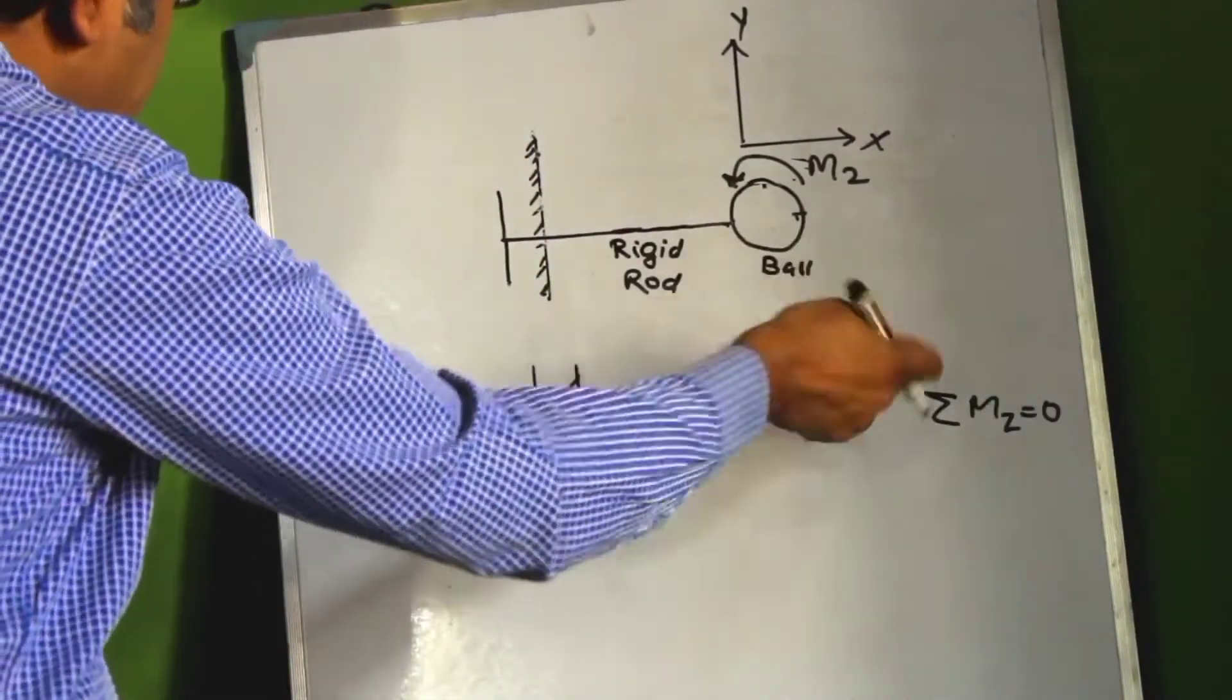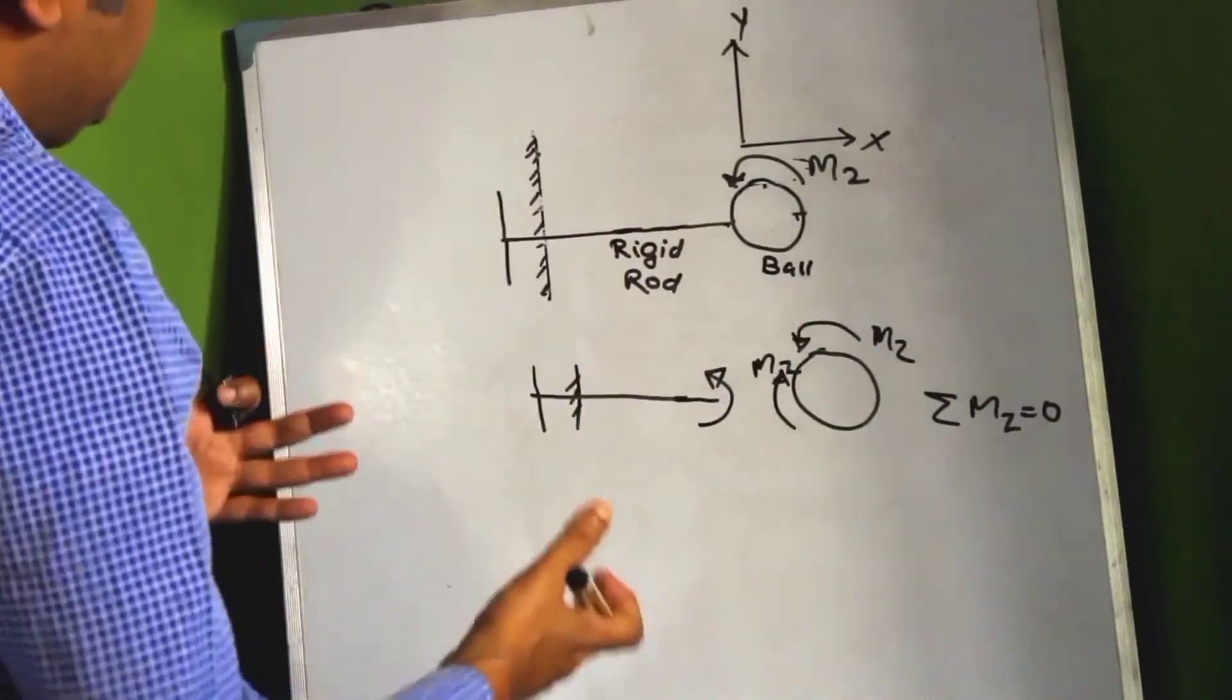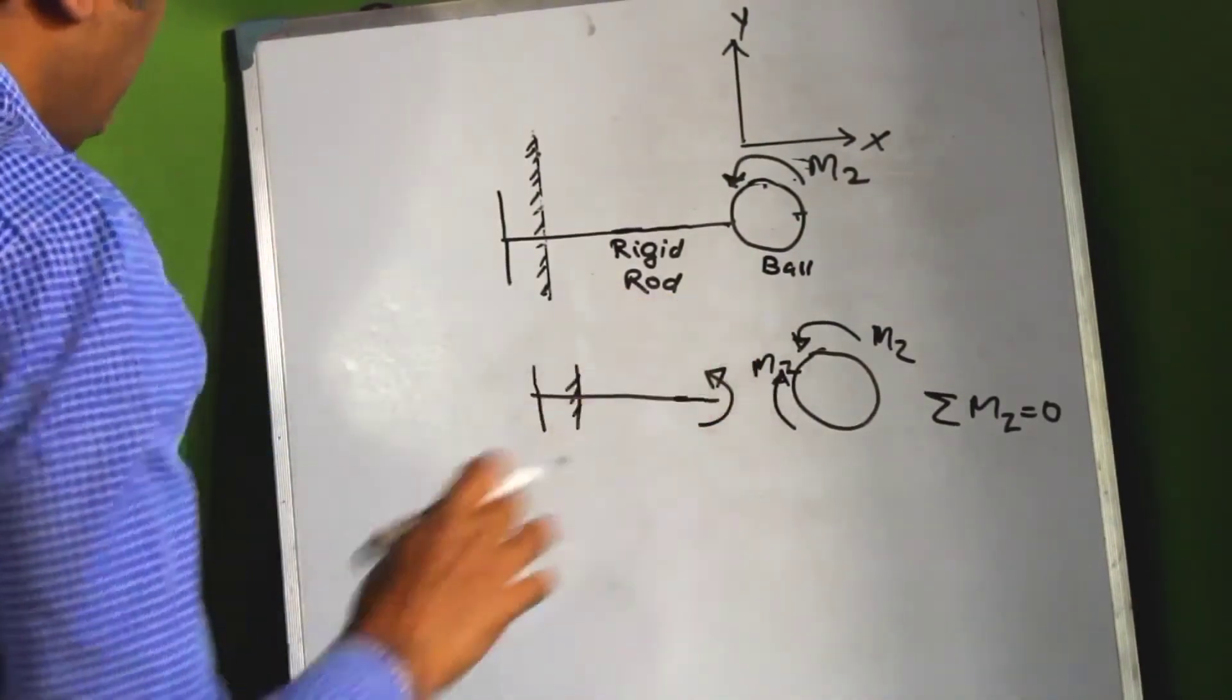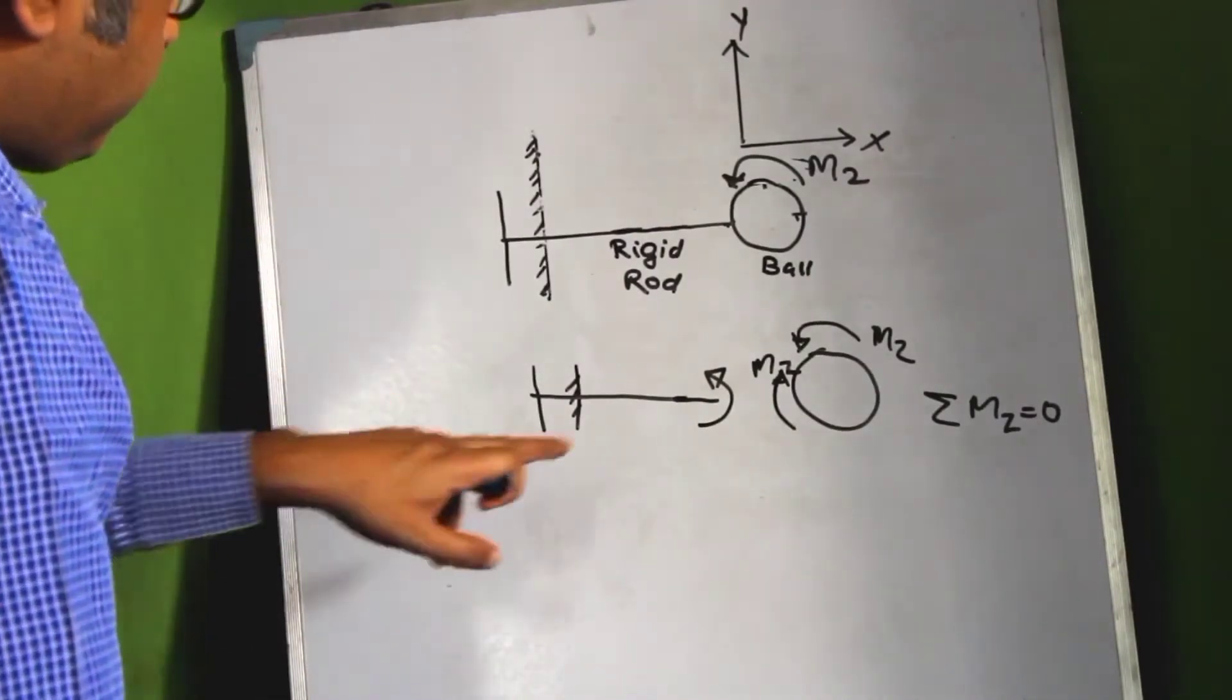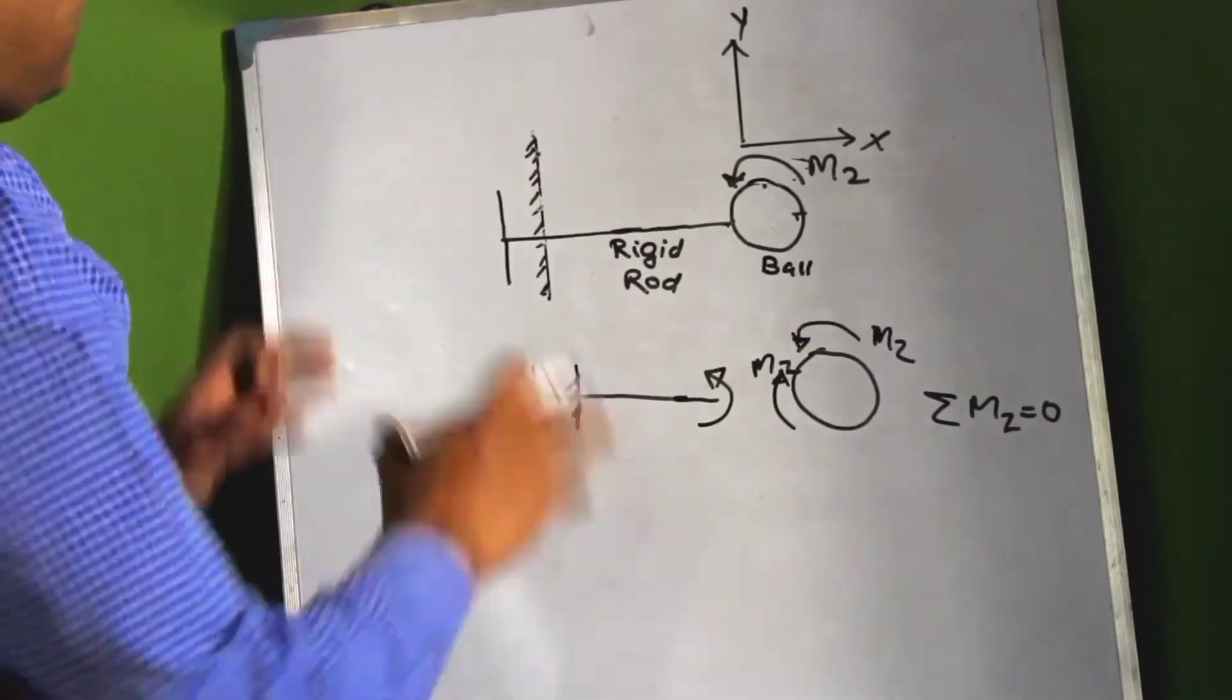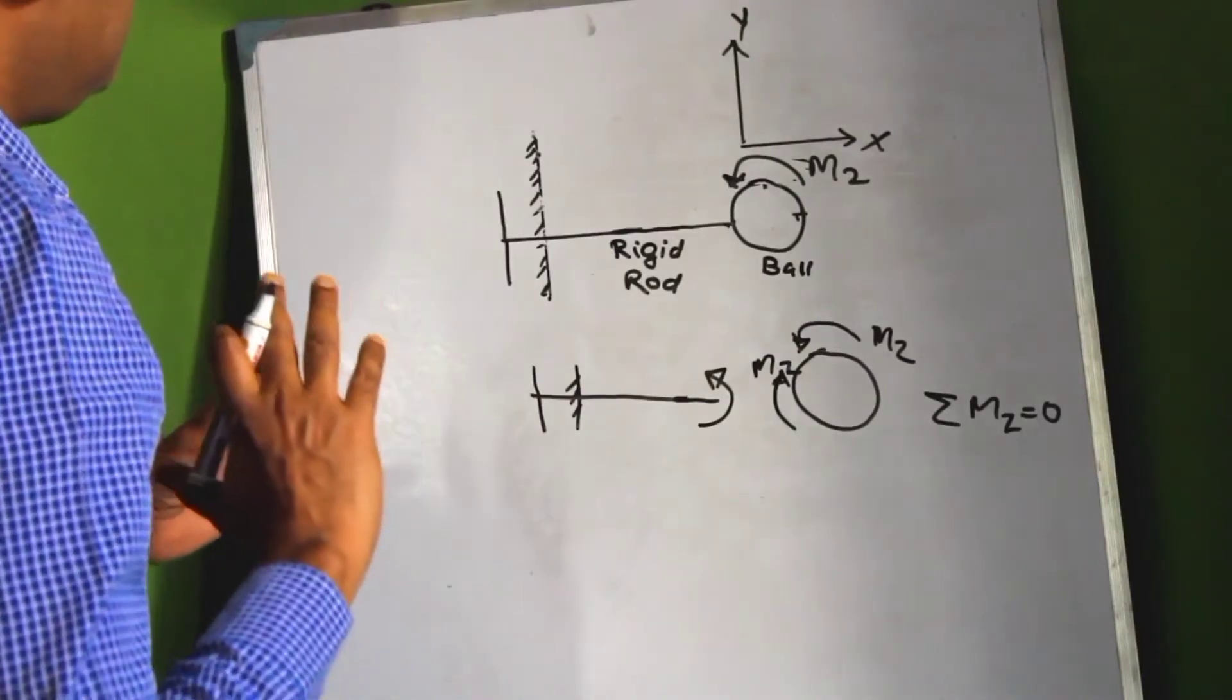As I have said these moments are equal and opposite. Similarly, if we apply a moment about X like this or about Y, the ball will not move because this rod will apply an equal and opposite moment to the ball and prevent it from rotating. The ball would have happily moved around in space if it were subjected to forces and moments in their respective directions.